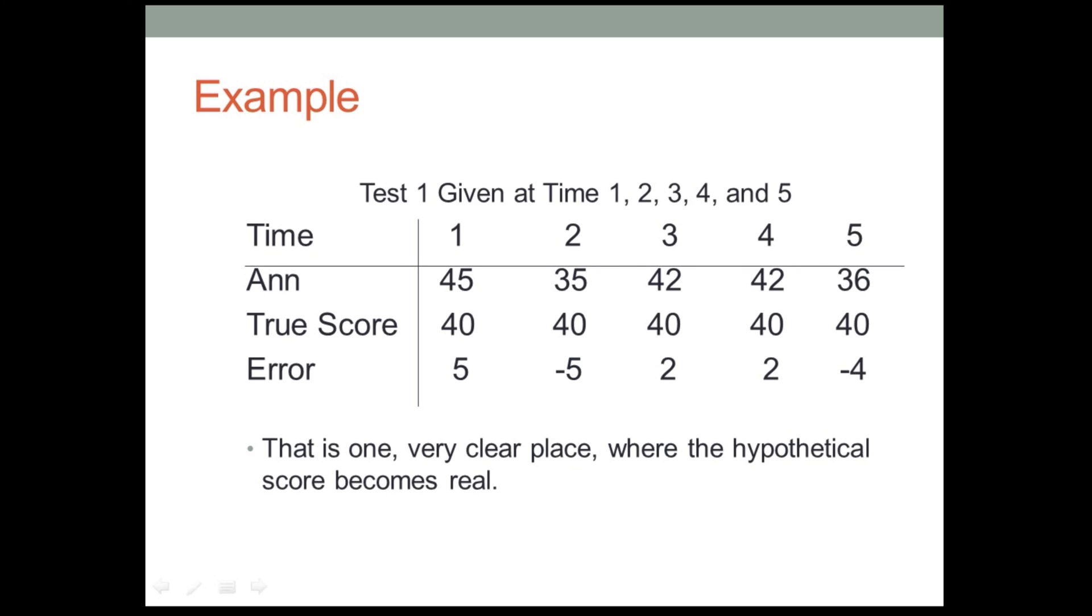So on the first time, it measures her five points too high, second one, five too low, and so forth. And if you take those scores that deviate above and below her true score and you average them out, you're going to get something close to her true score. In the case of this example, it comes out to exactly her true score, but it'll approximate it, get nearer and nearer to it as we add testing sessions. Okay, so that's that second assumption of classical test theory.